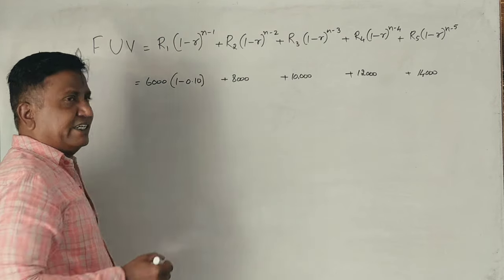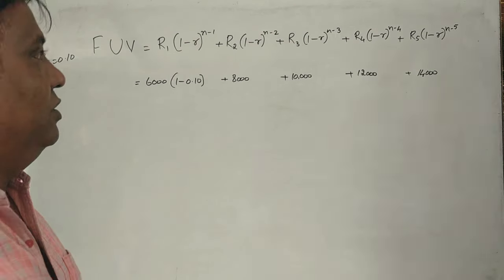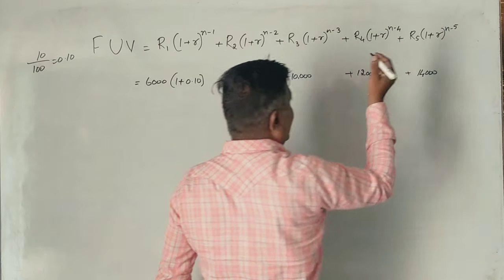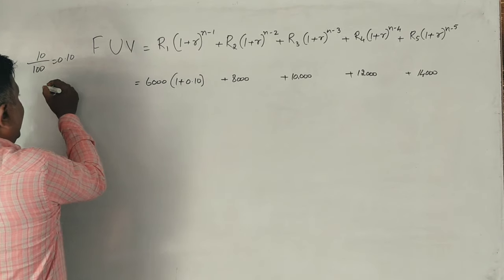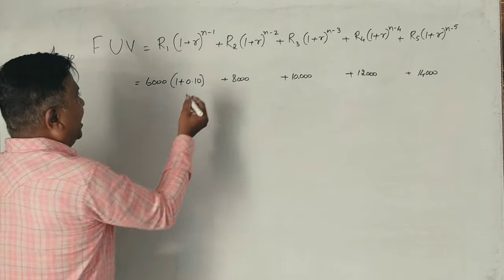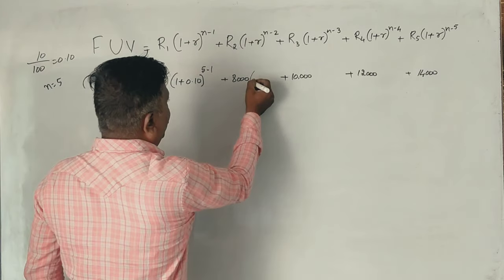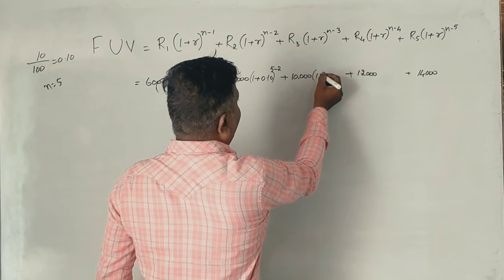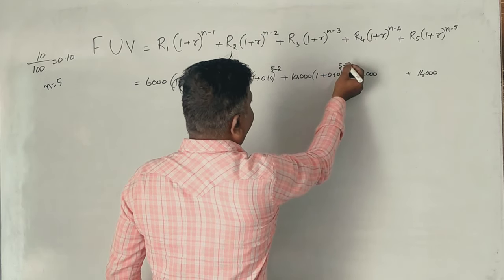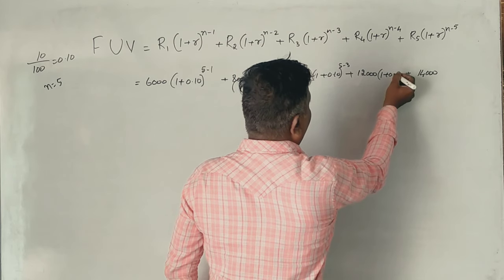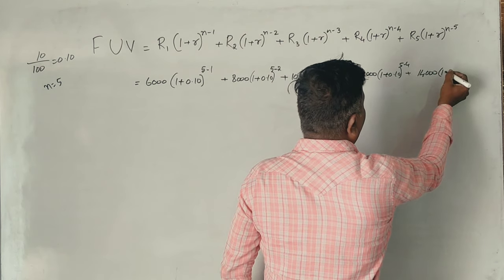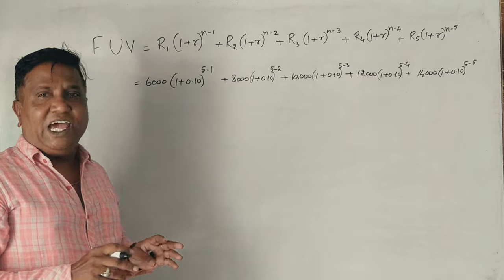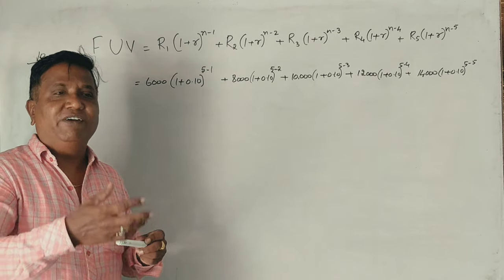The rate of interest is 0.10. The formula uses (1 + R). We are investing for 5 years. So the exponents are: 5 minus 1, then (1 + 0.10) to the power of 5 minus 2, then (1 + 0.10) to the power of 5 minus 3, then (1 + 0.10) to the power of 5 minus 4, and finally (1 + 0.10) to the power of 5 minus 5.